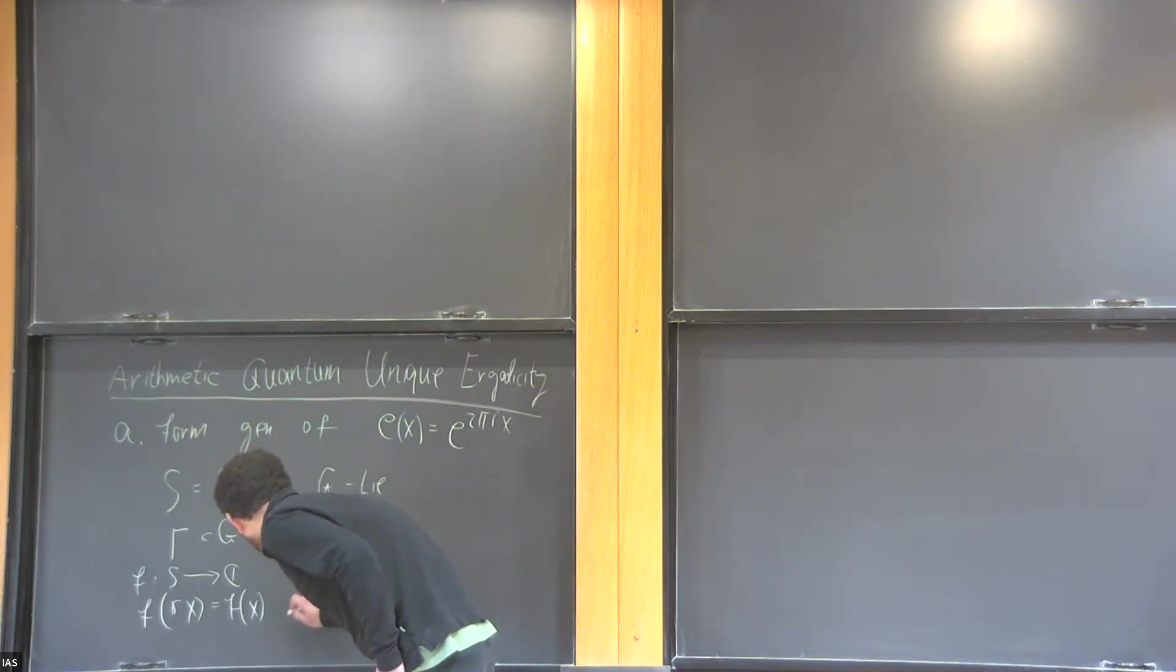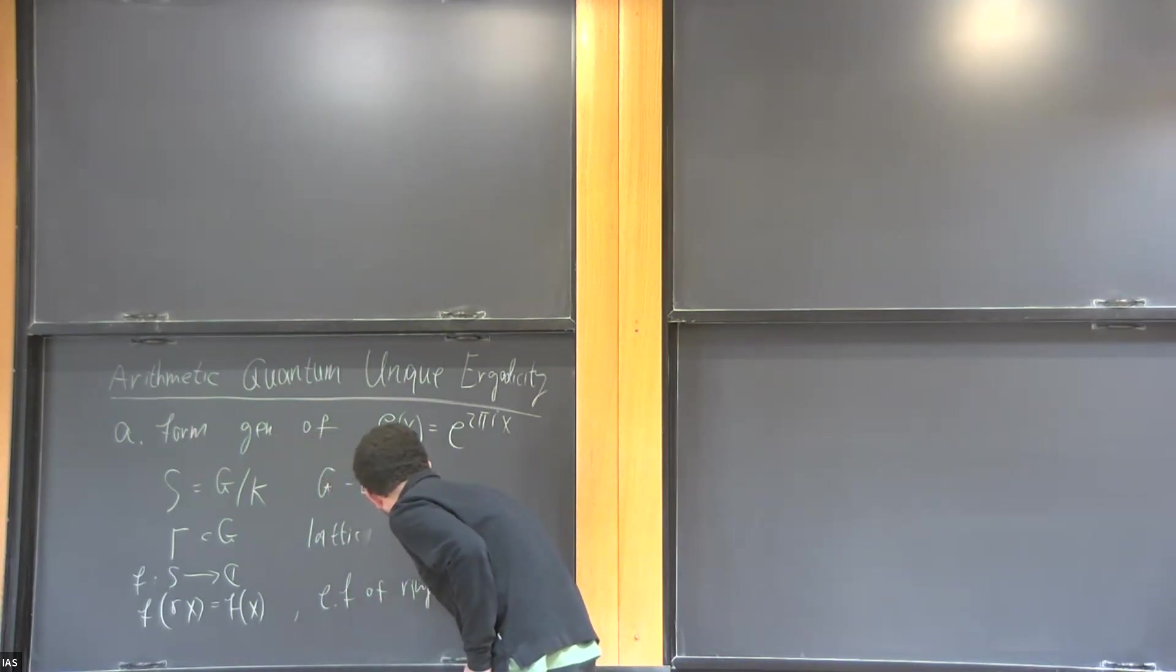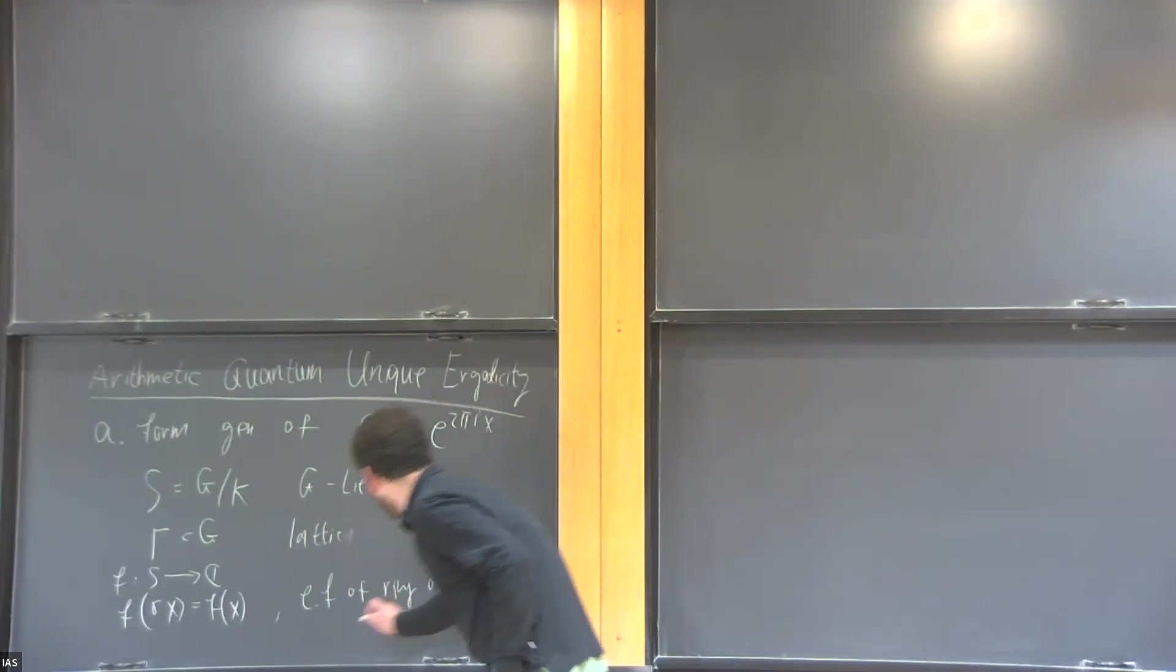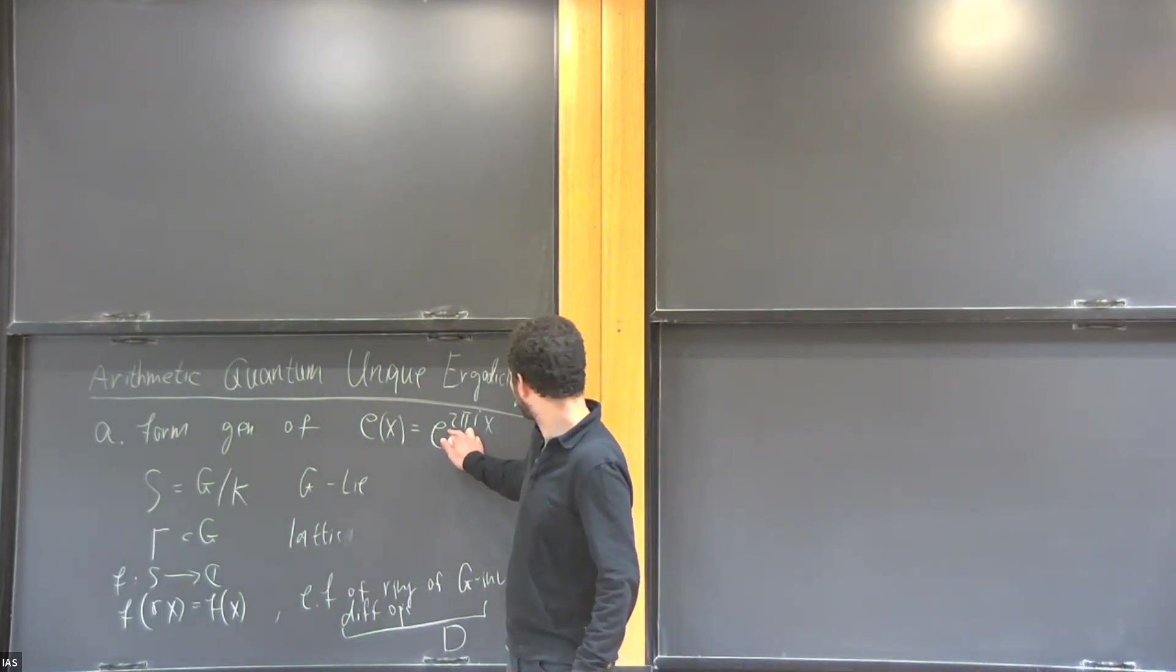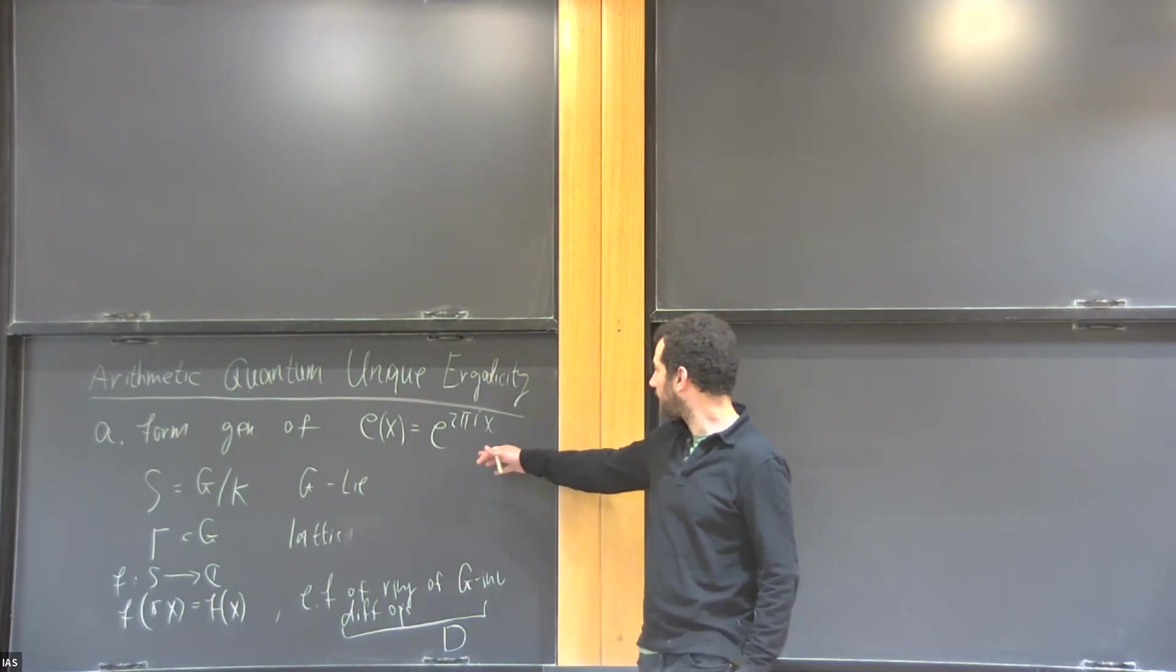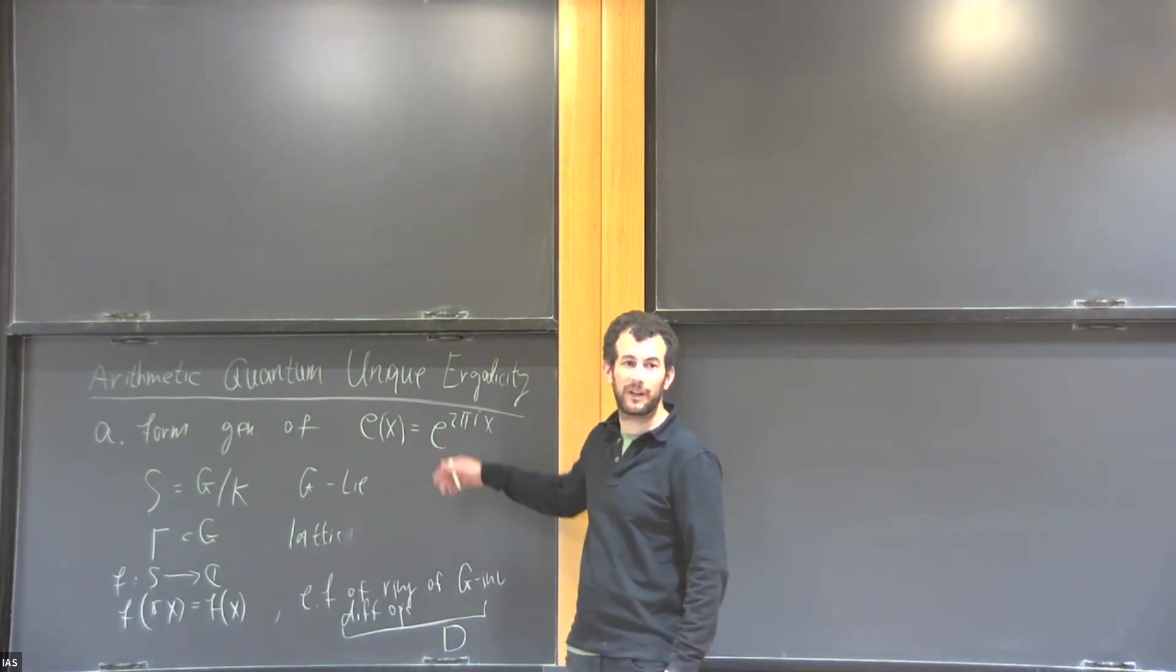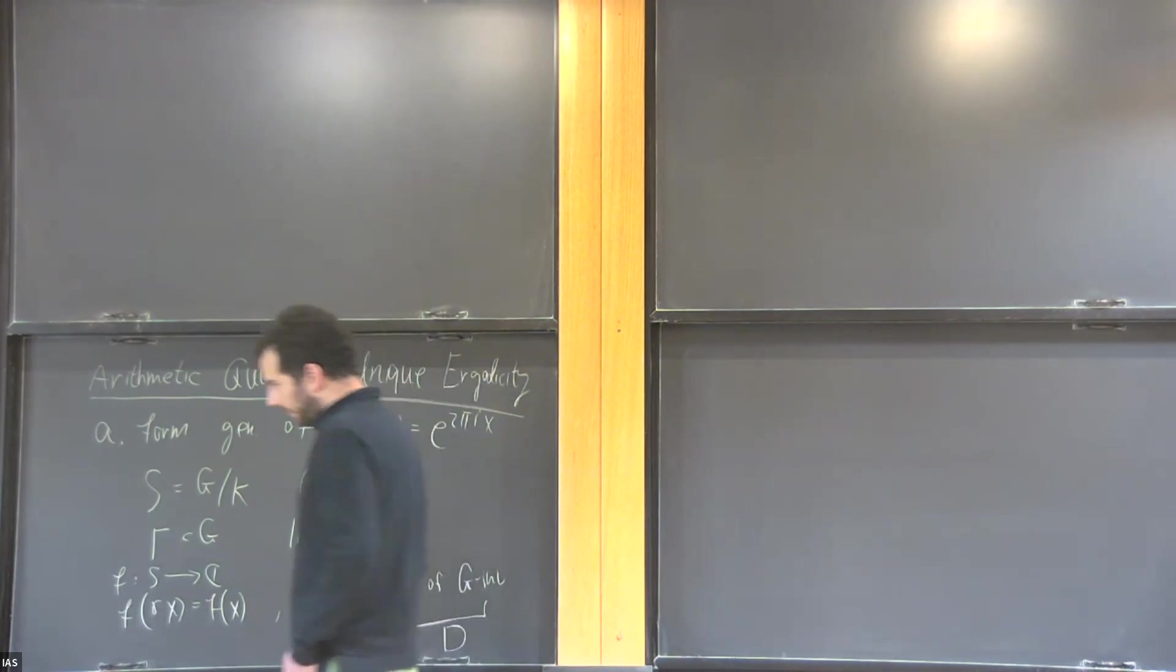And also f is an eigenfunction of the ring of all the invariant differential operators, denoted by D. For example, the exponential function is an eigenfunction of the Euclidean Laplacian.